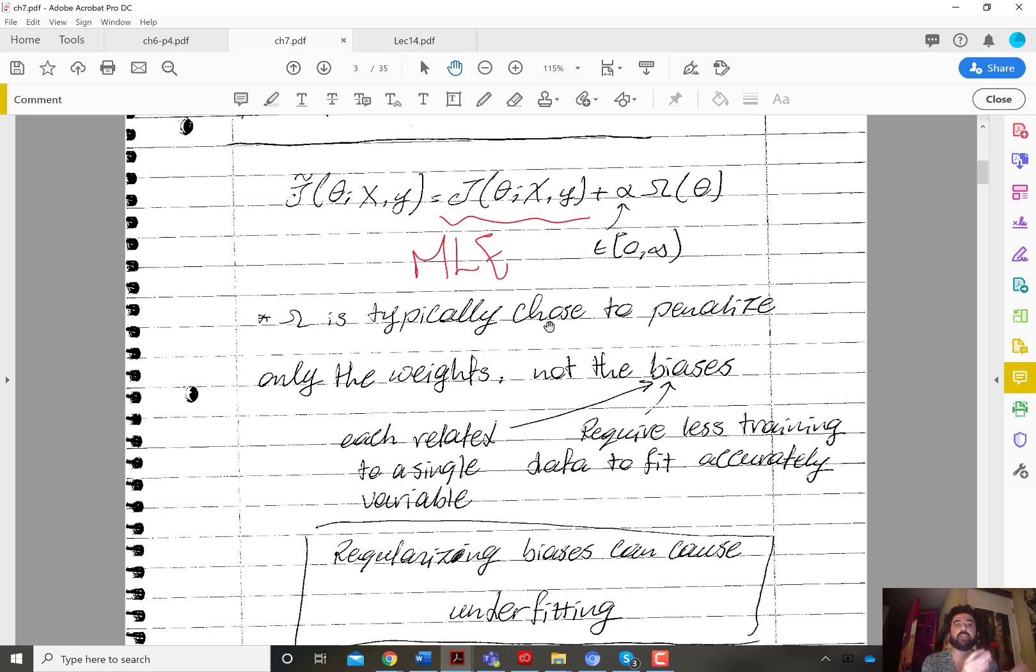If you have an L1 norm, then you want to enforce that the absolute value of the weights should be small. And as we'll see later in the analysis, actually, L1 norm promotes also a sparse final solution. And an L2 norm promotes a solution with weight magnitudes, whether positive or negative, that are small.